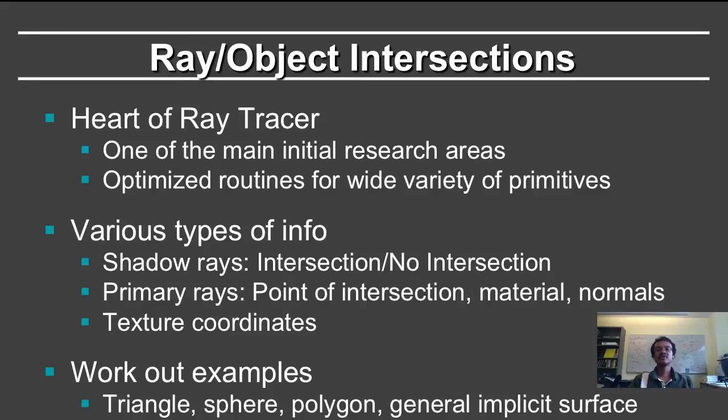Notice that different types of rays may need different types of information. For shadow rays, you just need intersection or no intersection. If you do find an intersection, it doesn't even need to be the closest intersection. For primary rays, you want the point of intersection, the materials at that point, the normal at that point, texture coordinates at that point.